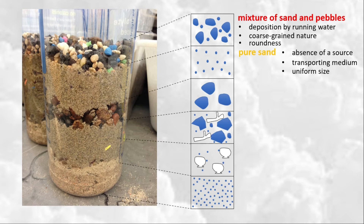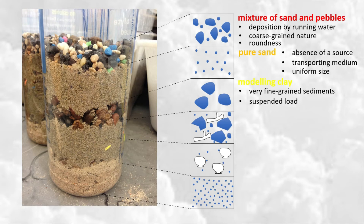Well-sorted sand or sandstone can also be associated with river sedimentation. The third layer is composed of modeling clay, representing very fine-grained sediments ranging from silt to clay size. Very fine-grained sediments are more commonly transported as suspended materials. Rivers, especially during flood events, carry a lot of suspended load. When flooding recedes, suspended load can settle down and be deposited as a blanket of mud and silt.